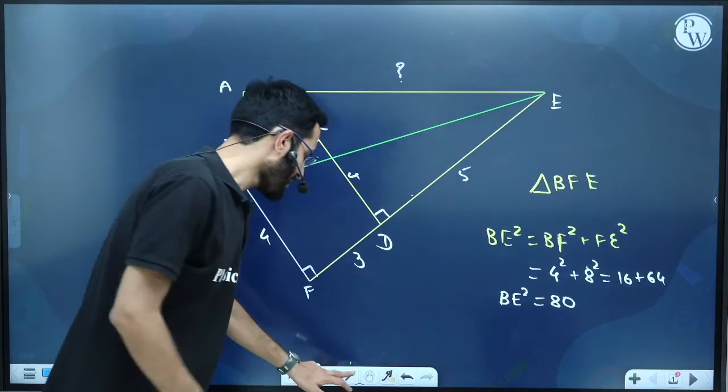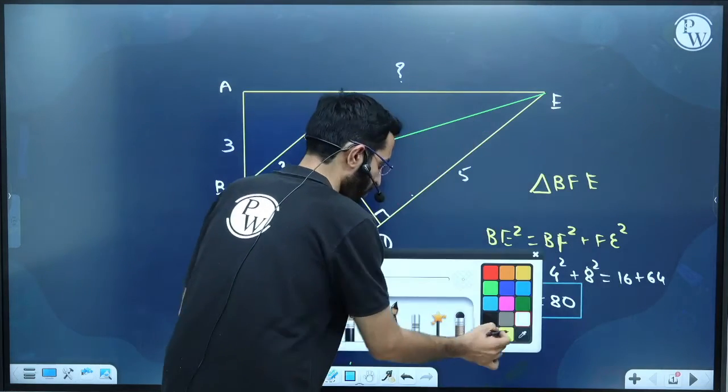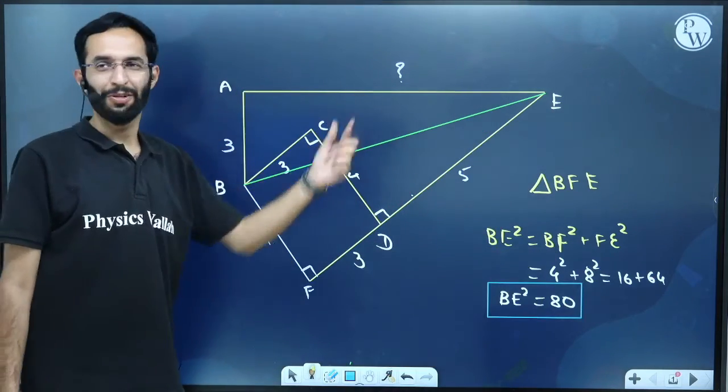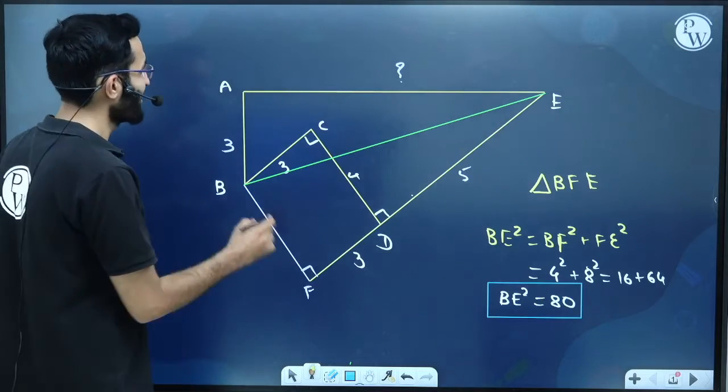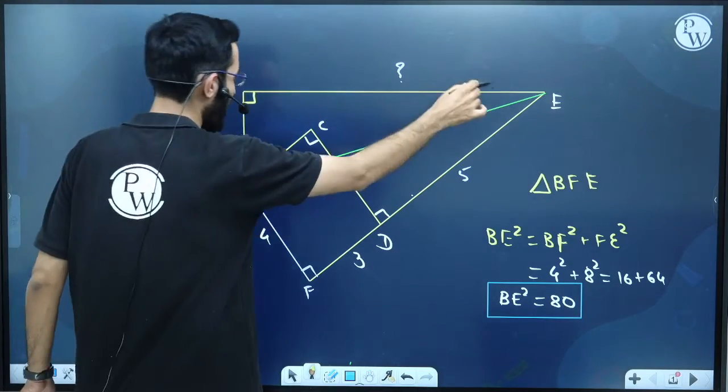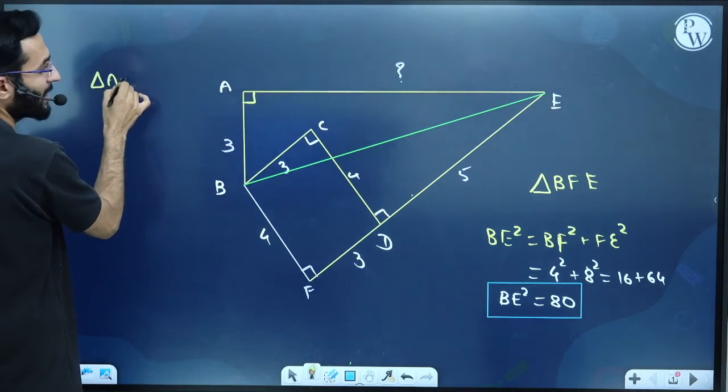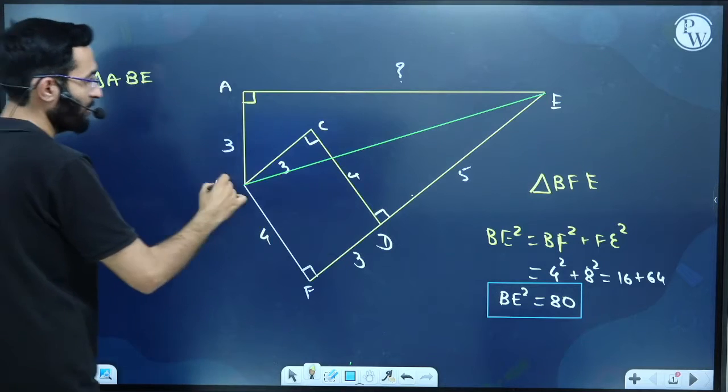We can utilize this BE to find the value of our required length, which is nothing but AE. How? You can see this is also 90 degrees, so here also we can apply Pythagoras theorem. If I apply Pythagoras in right angle triangle ABE, then BE will become the hypotenuse.